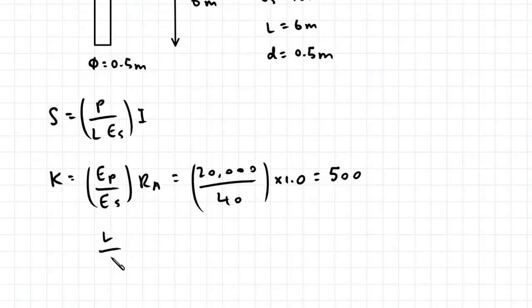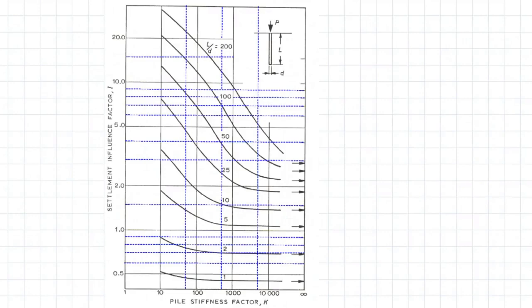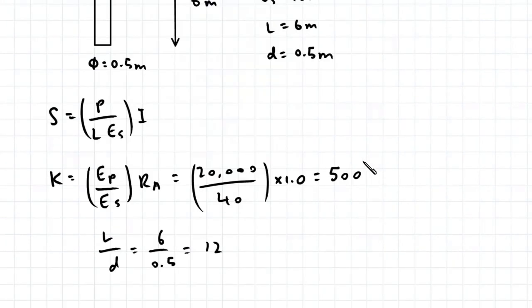Next we need to find the length to diameter ratio, so that's 6 over 0.5 which is 12. Going to the chart, our stiffness factor K is 500 — that's this line here — and our L to D ratio is 12. Projecting horizontally across gives us an influence factor I of about 1.6.